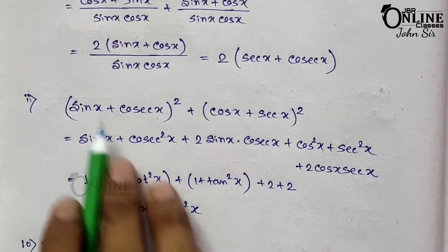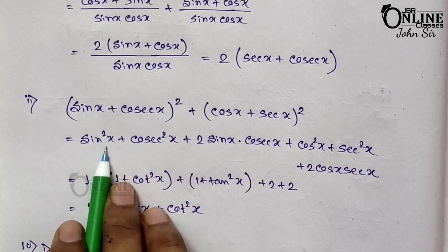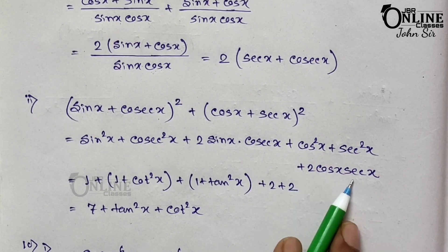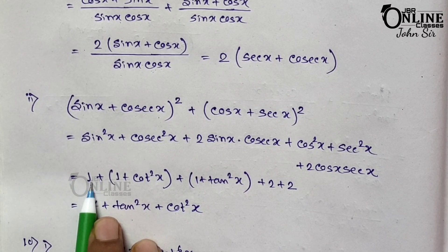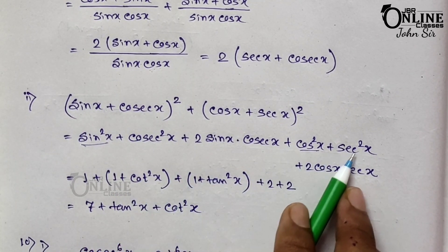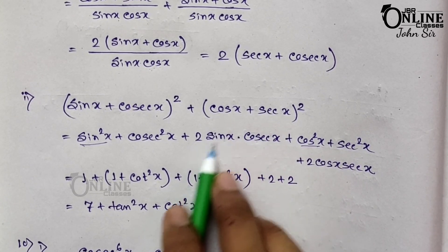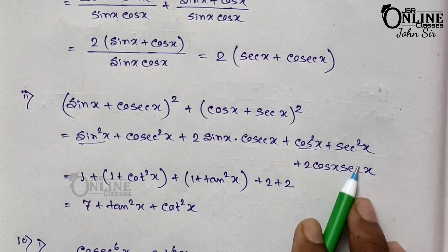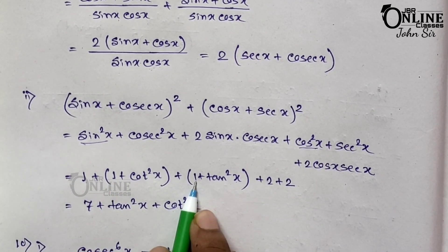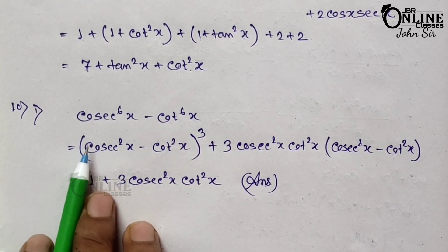Sum number 9.2: (sin x + cosec x)² + (cos x + sec x)². Expanding using (a+b)² = a² + b² + 2ab: sin²x + cos²x = 1. Cosec²x = 1 + cot²x and sec²x = 1 + tan²x. Also 2·sin x·cosec x = 2 and 2·cos x·sec x = 2. So total is 1 + (1 + cot²x) + (1 + tan²x) + 2 + 2 = 7 + tan²x + cot²x, proved.